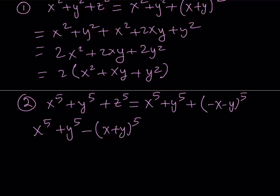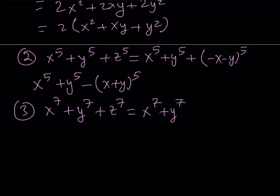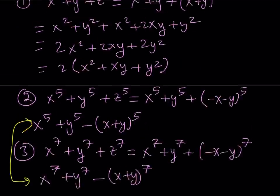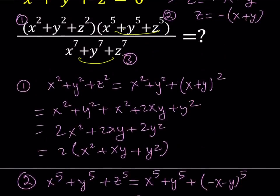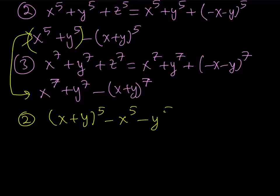In this case, I have to take x plus y to the fifth power, and we're going to use the binomial theorem. Let's also do the third one. The third expression is the sum of seventh powers, and we replace z with the opposite of x plus y; we can pull out a negative 1, just like the fifth powers. Since they're being divided, it's not going to matter if we negate both of them. So if I negate the second expression, it's going to be x plus y to the fifth power, and subtracting gives negative x to the fifth minus y to the fifth.